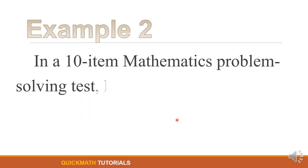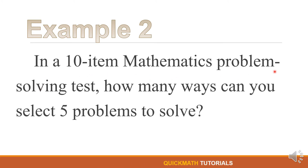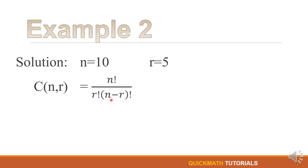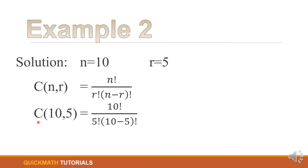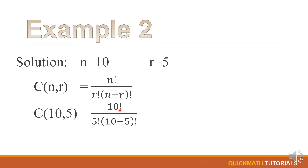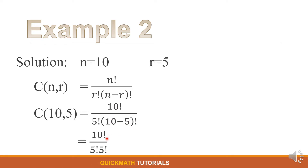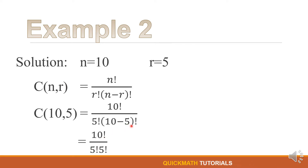Now, let's have our second example. In a 10-item mathematics problem-solving test, how many ways can you select 5 problems to solve? For our solution, n is equal to 10 and r is equal to 5. Using the formula, we substitute the values, giving us 10 factorial over 5 factorial times (10 minus 5) factorial, which is 5 factorial.